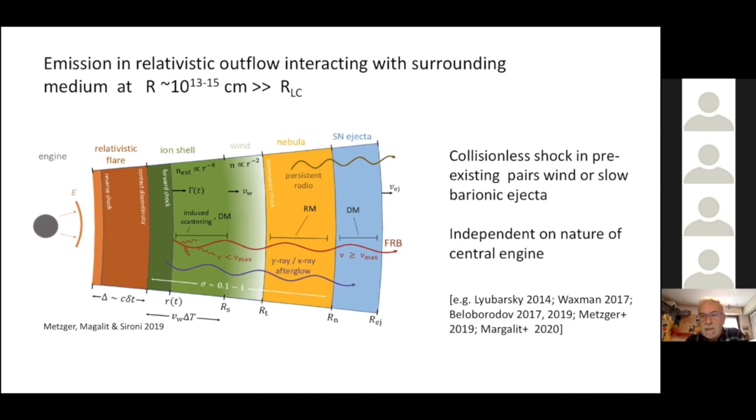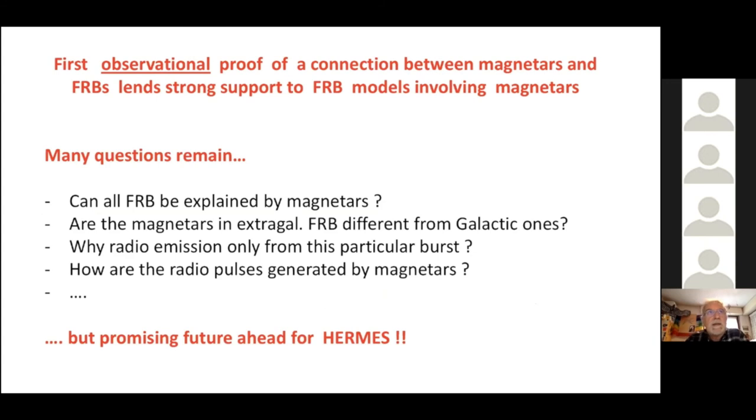So, I will conclude here just by saying once more that now we have this evidence for this connection that was suspected since a long time, but now we have a solid basis. I think that the problem of what the FRBs are, is not solved, but definitely I think that these results strongly support all the models that involve magnetars. And I think that this also implies a very interesting and promising scientific case that will be very useful to investigate with the Hermes. Thank you.